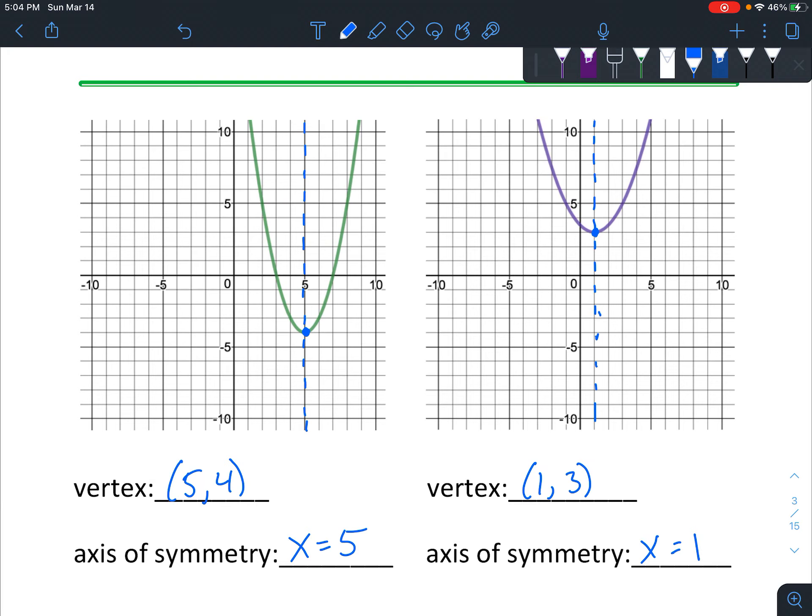All right, that's it for today. So on your assignment you'll be given a graph and you're just going to name the vertex and the axis of symmetry. Let me know if you have any questions.